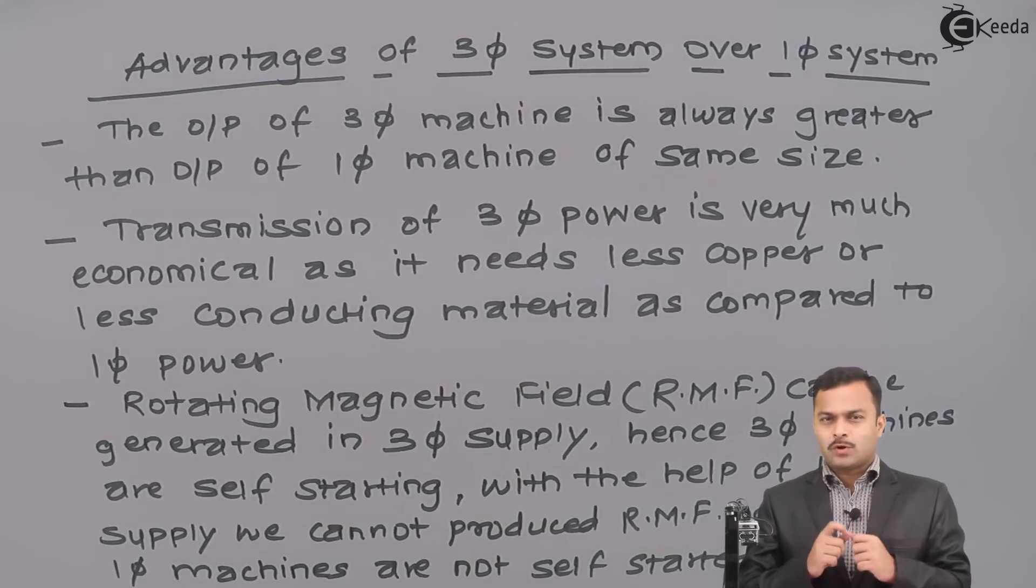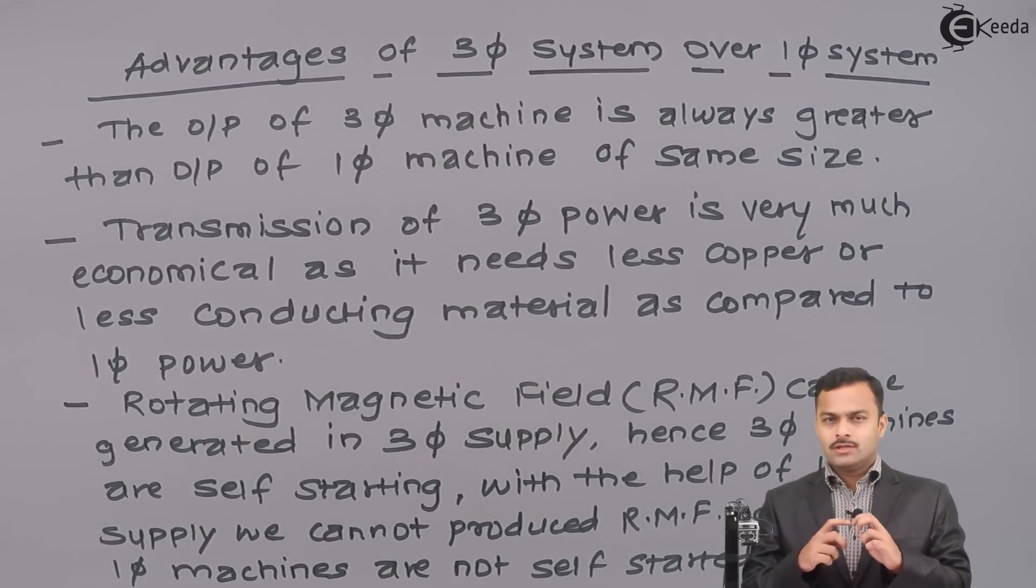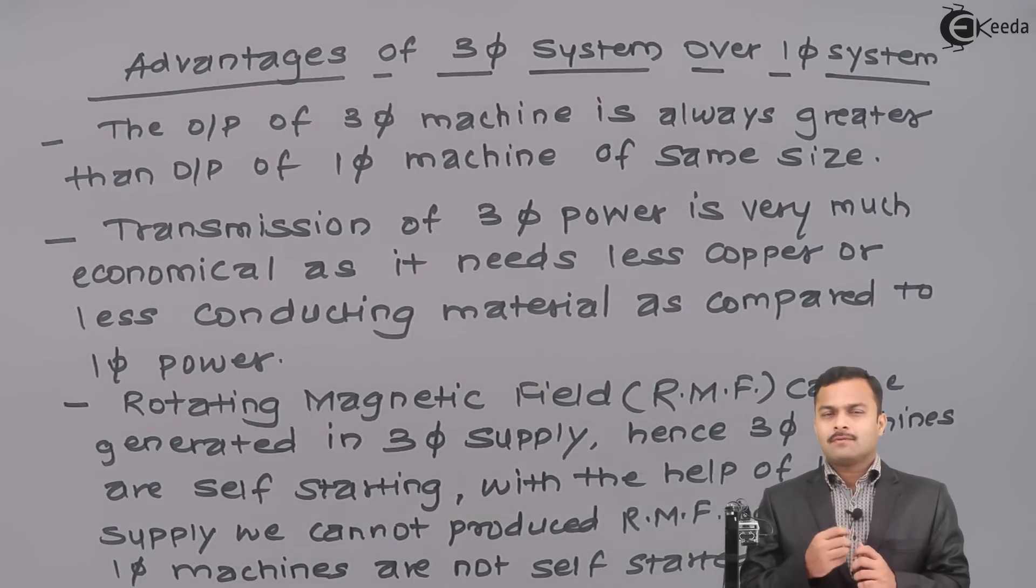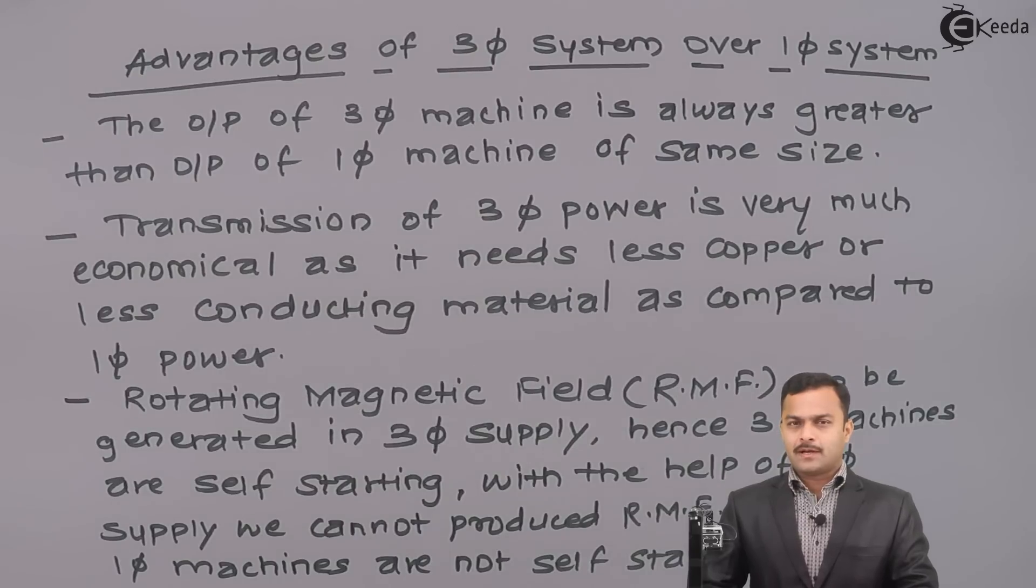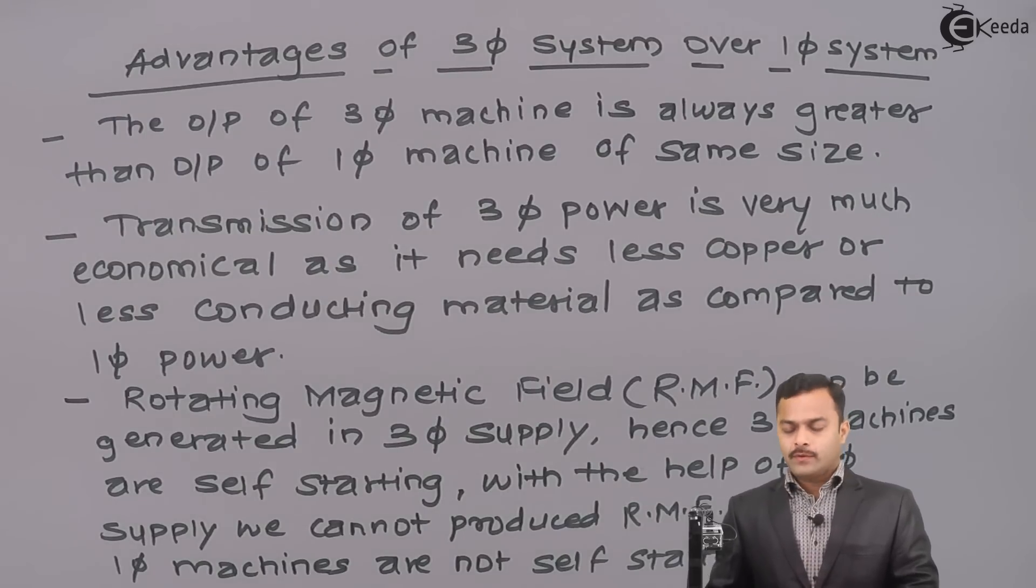In a fan, capacitor is provided to provide one more phase. So, actually we are having two phases over there and because of that whenever we are having more than one phases, rotating magnetic field can be produced. So, this is the advantage of three phases. Rotating magnetic field can be produced and because of that no need to do any arrangement the way we have done in single phase motors.